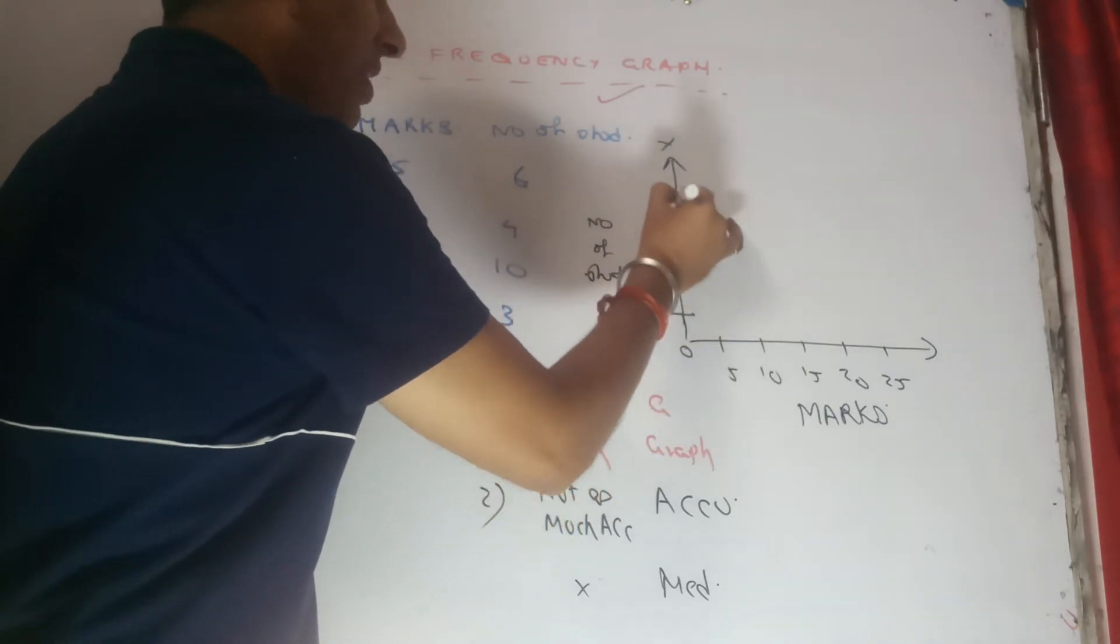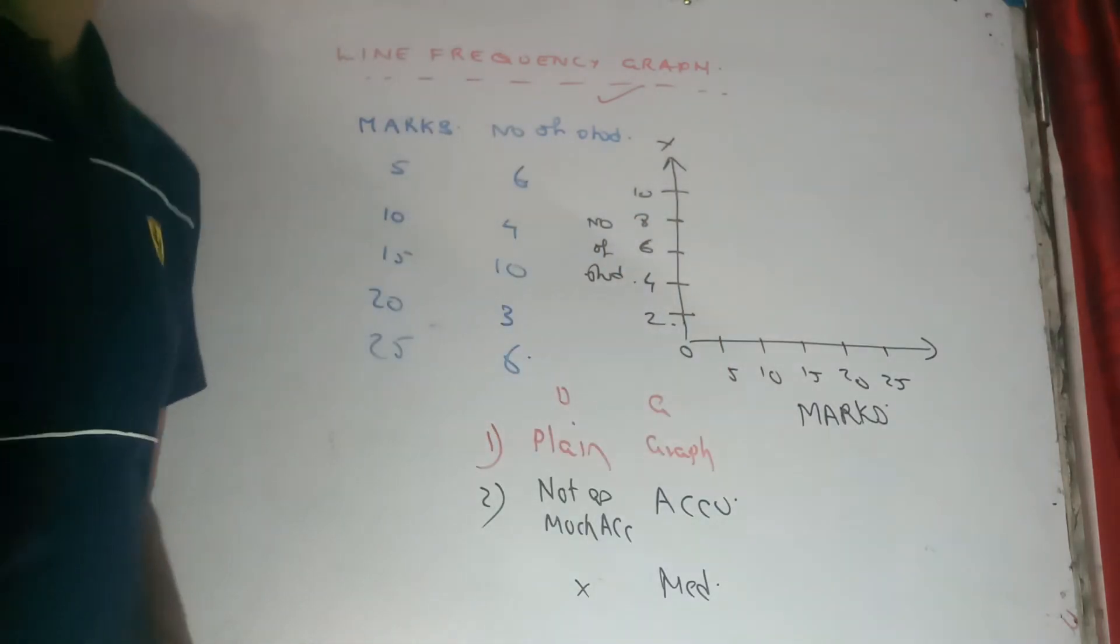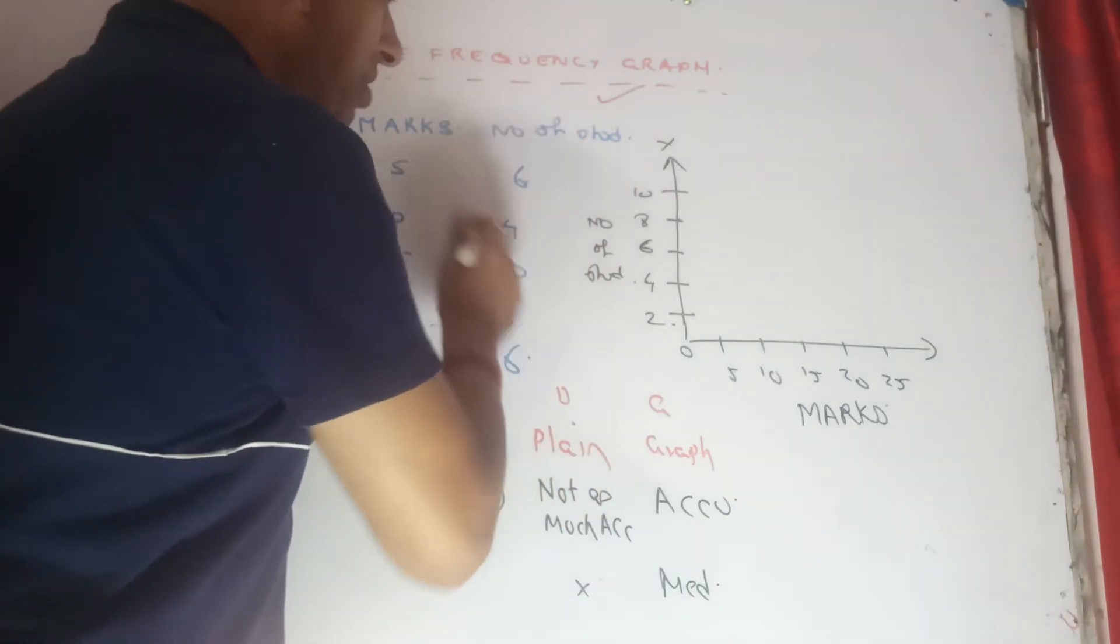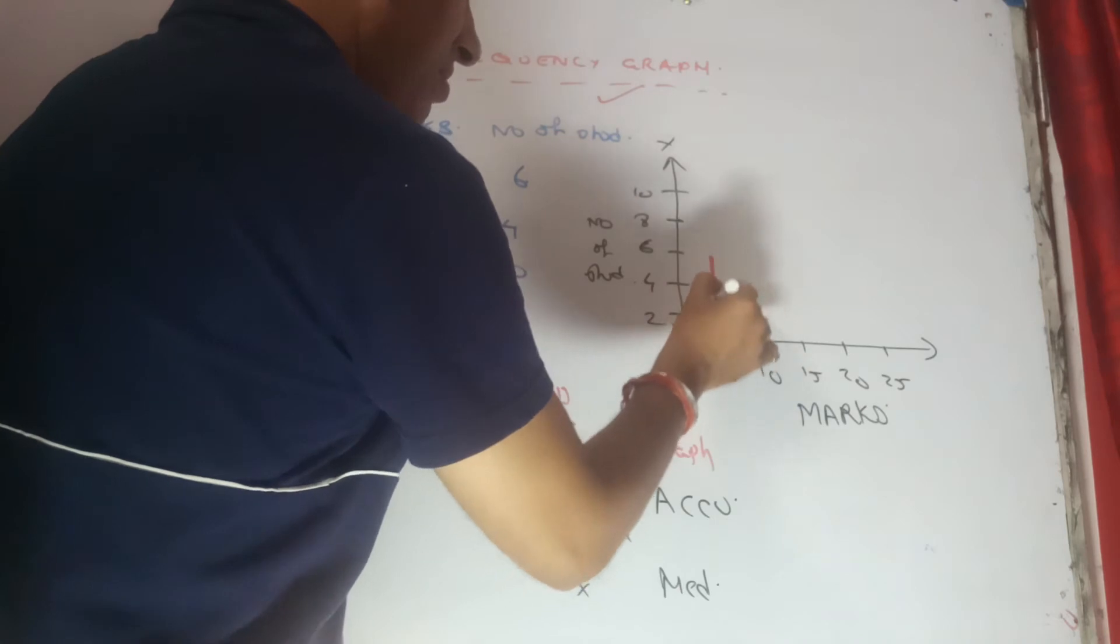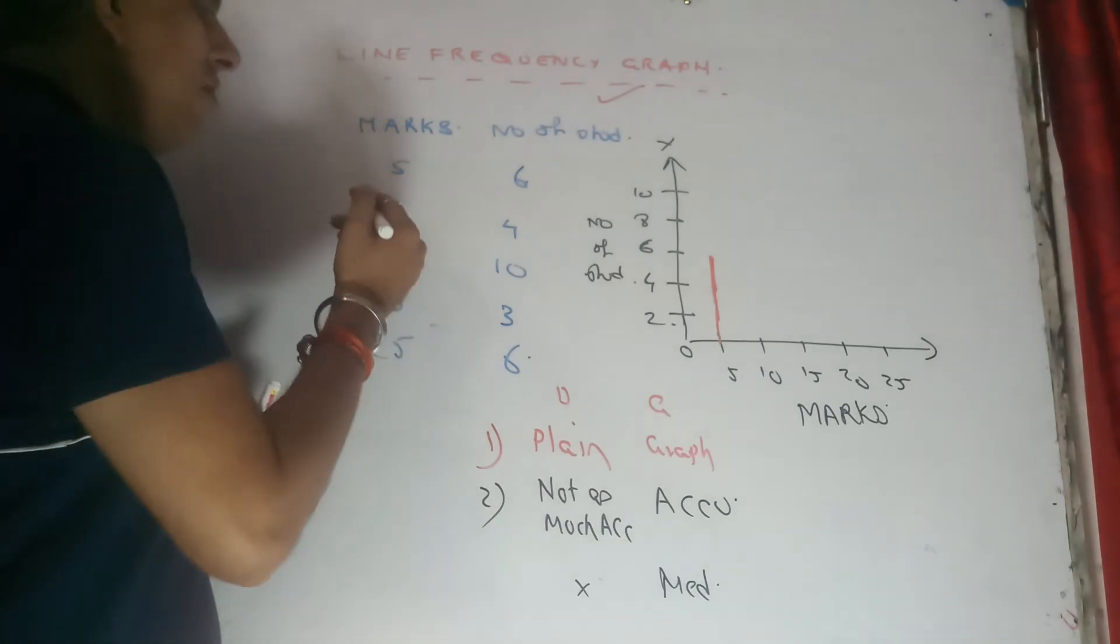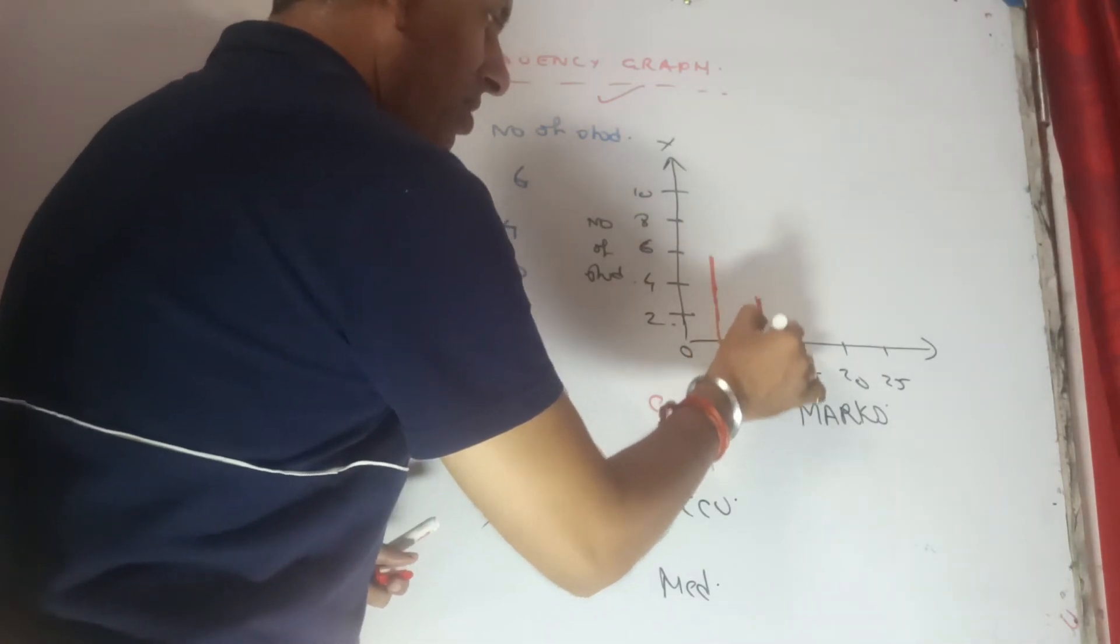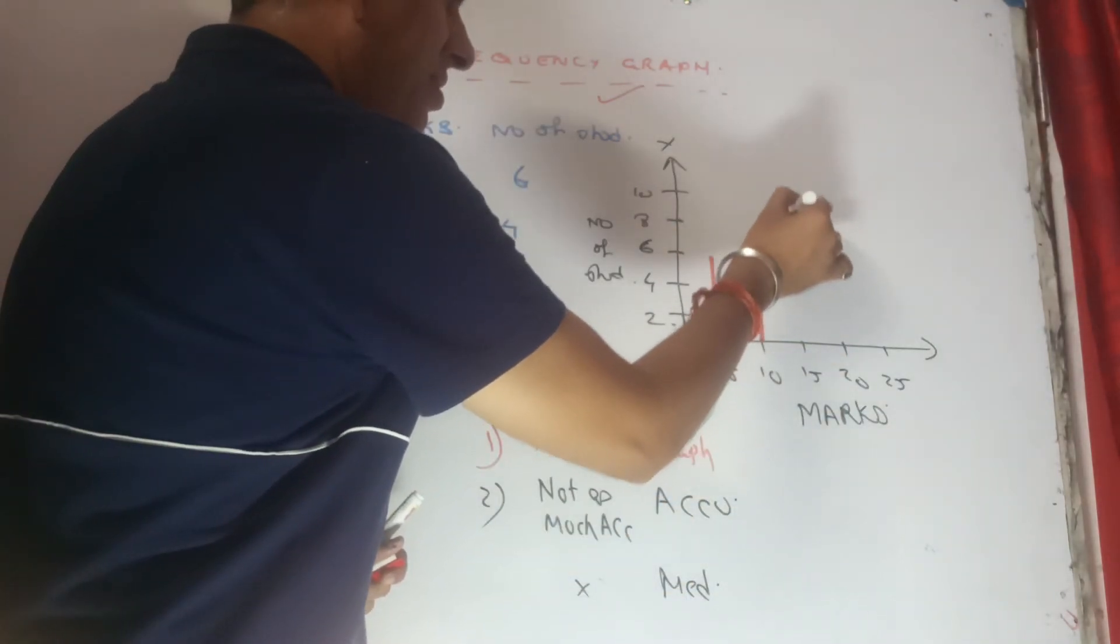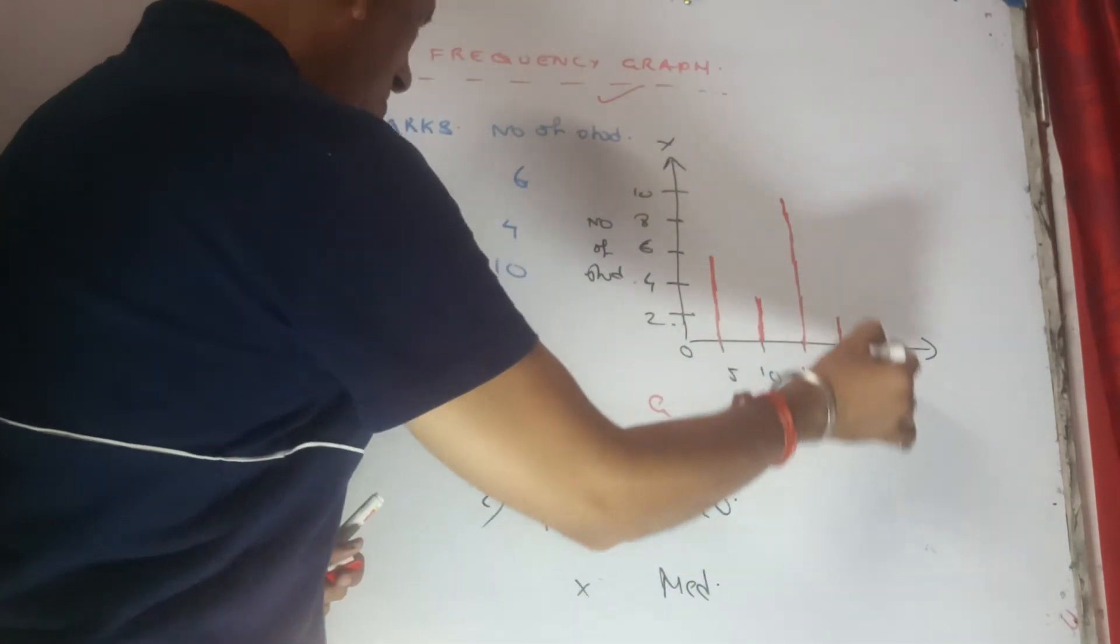2, 4, 6, 8, and 10 as our requirement is limited to this much. So very quickly let's draw the lines as this corresponds to the marks. Number of students 6 representing 5 marks, so I'll draw a line representing my simplest of graphical presentation. 10 marks is by 4 students. Similarly, 15 marks are scored by 10 students, 20 by only 3, and 25 by 6 students.